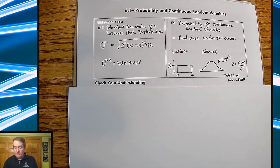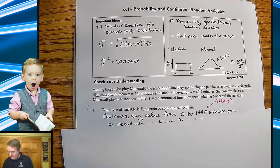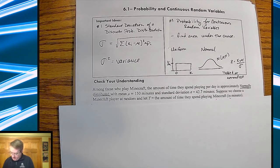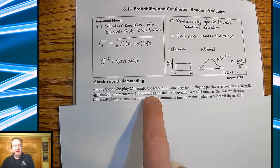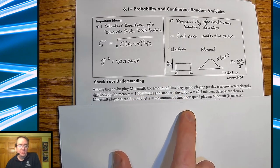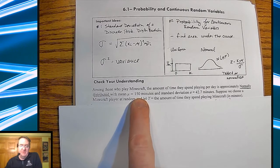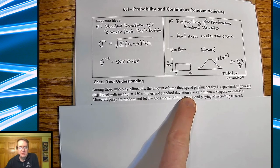For the check your understanding, we're going to talk about Minecraft. I know, shocking, ain't it? Among those who play Minecraft, the amount of time they spend playing per day is approximately normally distributed. So if it says normally distributed, you can follow the normal curve. The mean is going to be 150 minutes, standard deviation of 42.7 minutes.